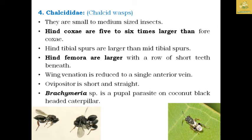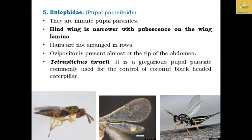The family Eulophidae are known as pupal parasites. They are minor pupal parasites with narrow hind wings having hair-like setae on the wing lamina, not arranged in rows. Example: Tetrastichus israeli, a gregarious pupal parasite commonly used for biological control of coconut black-headed caterpillars. The ovipositor is located almost at the tip of the abdomen.